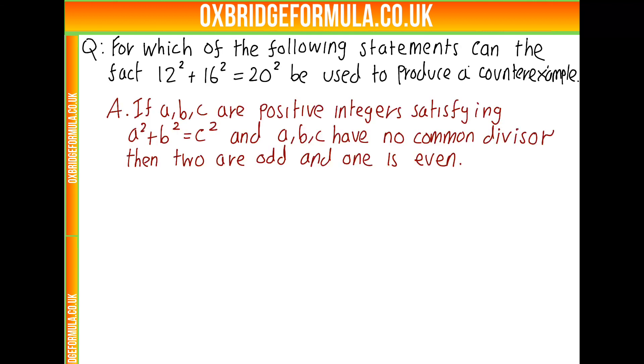Statement A: If A, B, and C are positive integers satisfying A squared plus B squared equals C squared, so A, B, C are a Pythagorean triple, and A, B, C have no common divisor, then two of the numbers are odd and one is even.